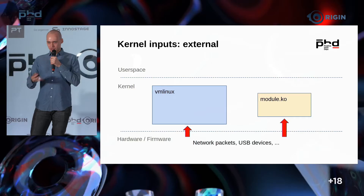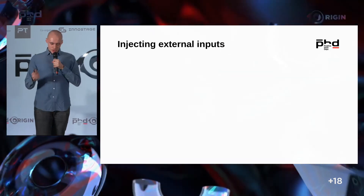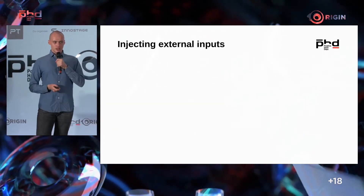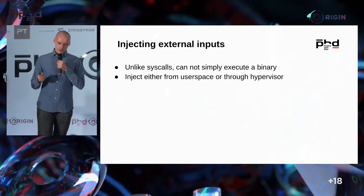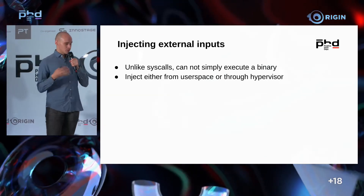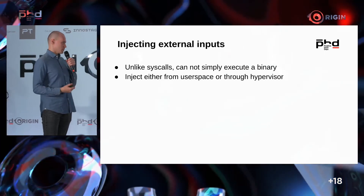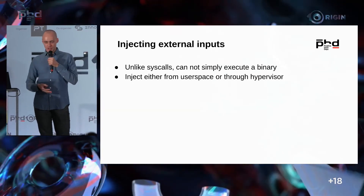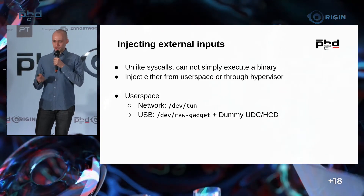For example, if you send a TCP packet to the system, the kernel should parse it and understand which port it was addressed to in order to deliver it. How do we deliver these inputs? Syscalls are executed as binaries, but delivering a USB packet or device is more difficult. There are two approaches: first, from user space using a ready-made driver that hooks into the required kernel part and injects the packet; or second, through the VM hypervisor, which can emulate the situation where a packet has arrived.